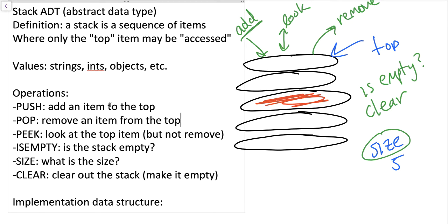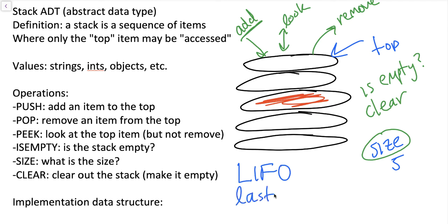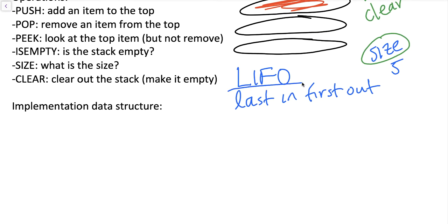For "is the stack empty," we simply call this isEmpty. The size of the stack is simply size. And clearing out the stack is simply clear. Push, pop, and peek are probably the three core operations of a stack ADT, and because they only interact with the top item, we say that a stack is a LIFO — last-in, first-out — data structure. You may also see this written as FILO, meaning first-in, last-out. They mean the same thing.